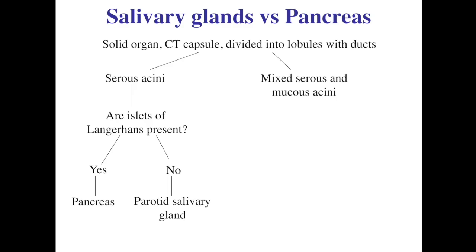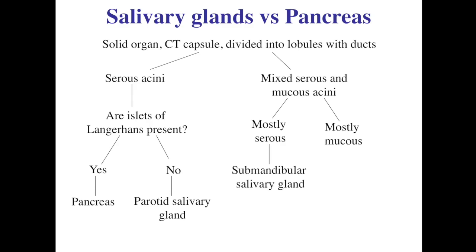If you're looking at a section with a mix of both serous and mucous acini, the next question is: is it mostly serous with a little mucous, or mostly mucous with a little serous? Based on the normal histology of the major salivary glands, the submandibular is a mostly serous gland that also has some mucous components, while the sublingual is a mostly mucous gland with a little serous — those serous components exist as serous demi-lunes on the surface of the mucous acini.